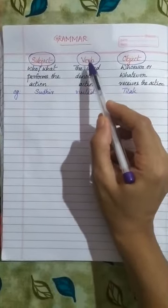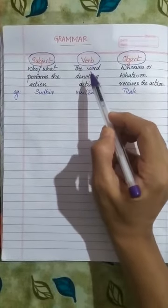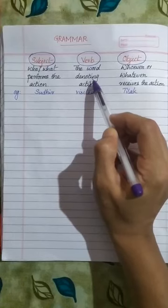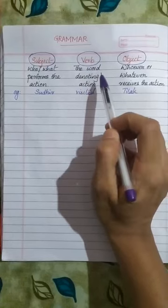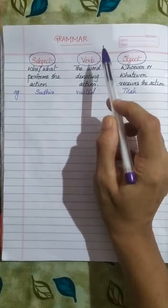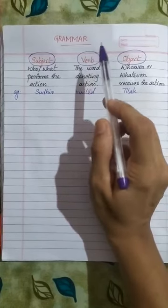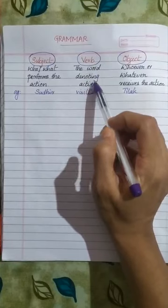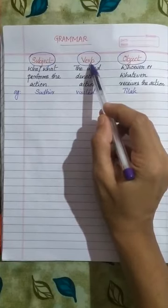What do you mean by verb? A verb is a word denoting an action — a word that expresses an action. Doing words are known as verbs.